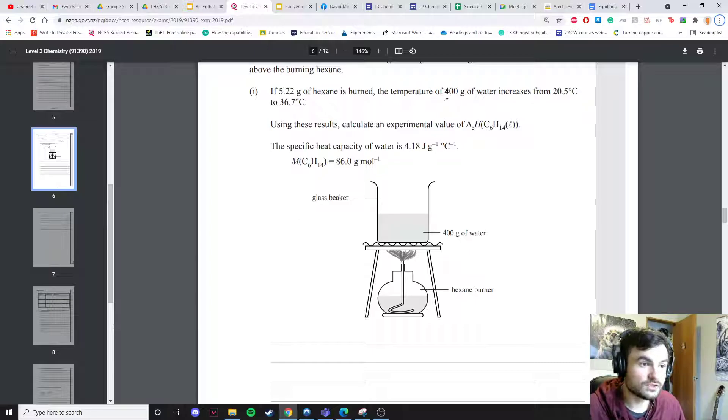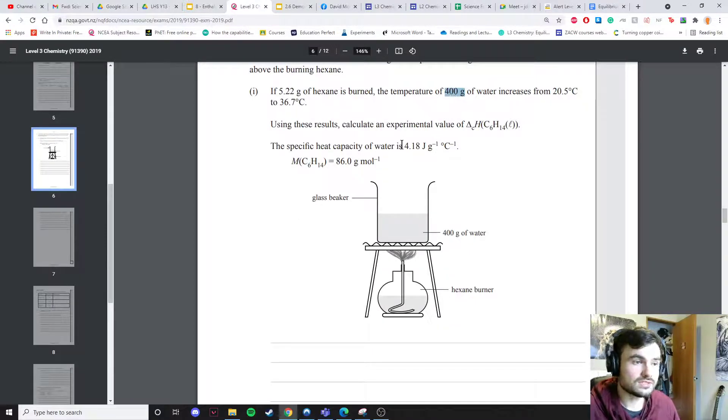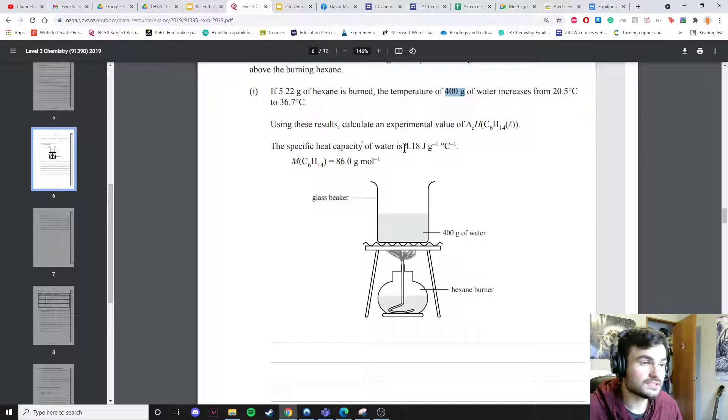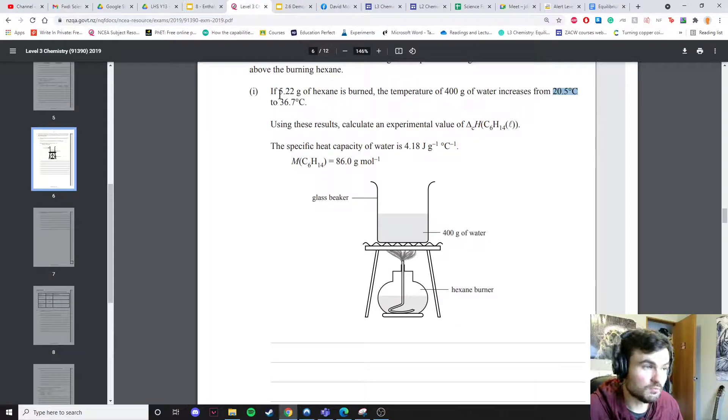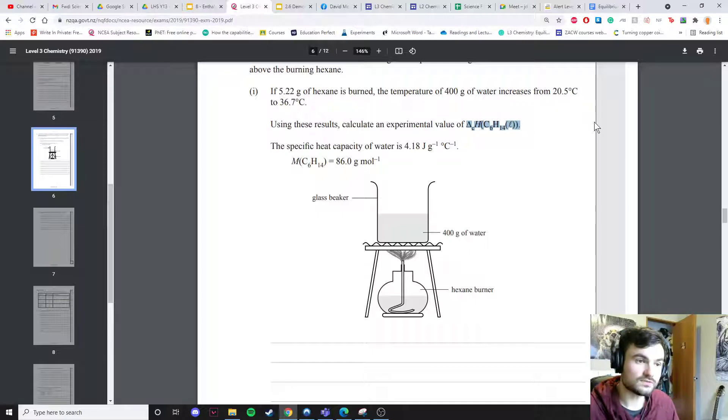Our M is 400 grams, our C is our specific heat capacity 4.18 as it always is for water, and our temperature change is 36.7 minus 20.5 for the change in temperature. By using that and working out the number of moles of hexane, we can work out this number which a lot of you did in the Google classroom post.